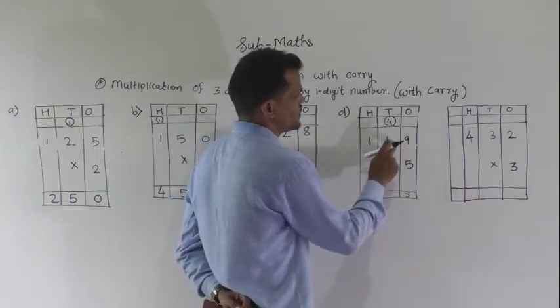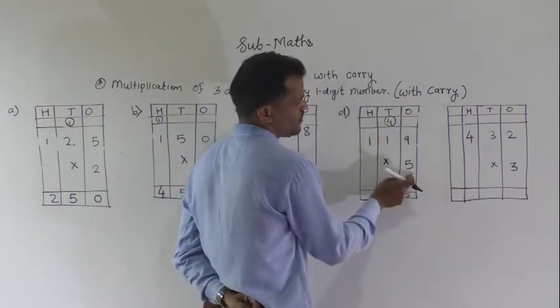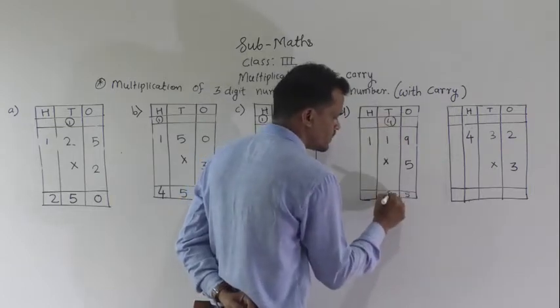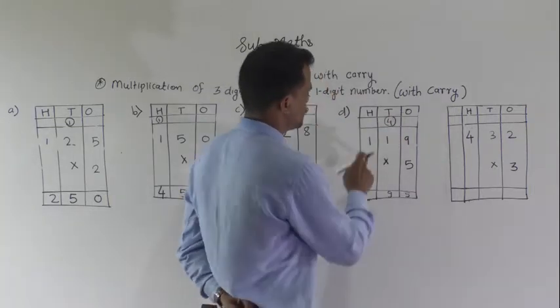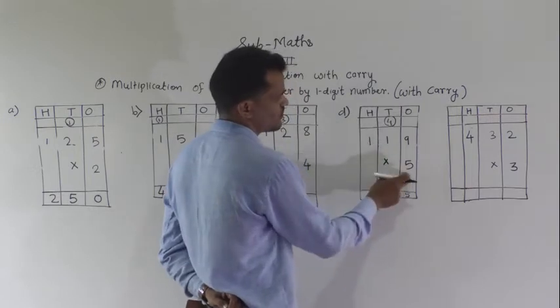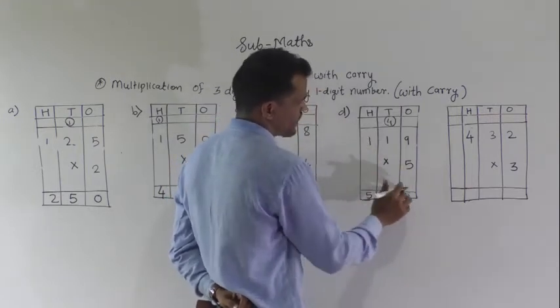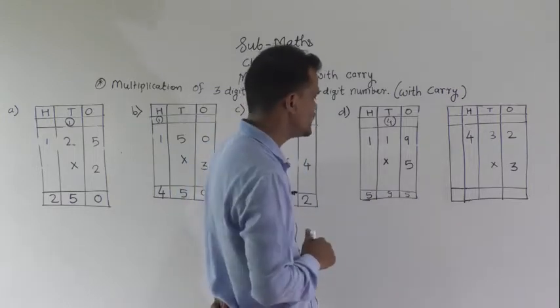Then, multiply the tens digit by 5. 5 times 1 is 5. 5 plus 4 is 9. Next, multiply the hundreds digit by 5. 5 times 1 is 5. So, 595 is the product.